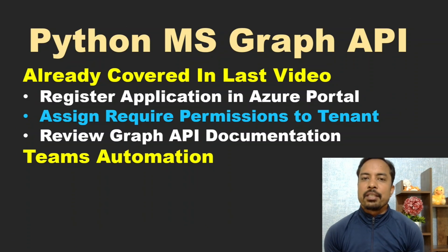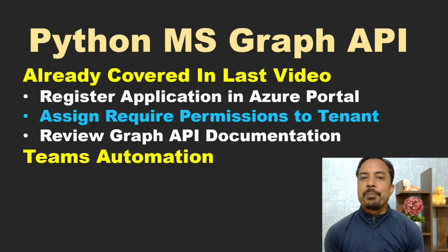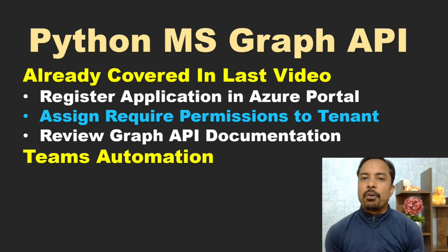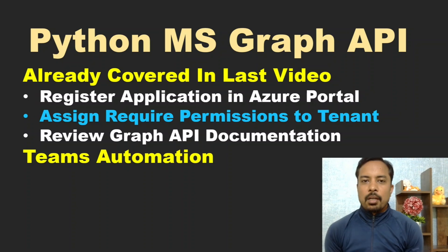Before we perform any task using Graph API, we have to complete a few steps. We have to register an application in the Azure portal, assign required permissions, and review the Graph API documentation to get different kinds of links. I have covered all of this in the first video of this series on how to send email using Graph API. You will find the link in the description.